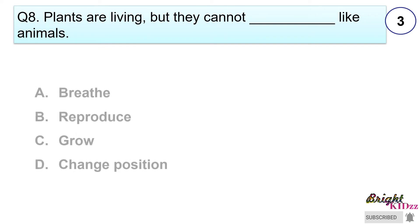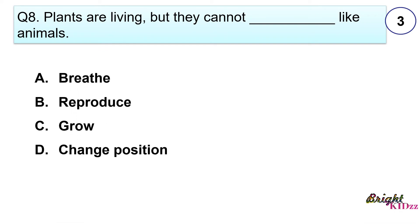Plants are living but they cannot dash like animals. A. Breathe, B. Reproduce, C. Grow, D. Change position. Answer D. Plants are living but they cannot change position like animals.